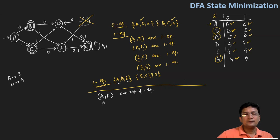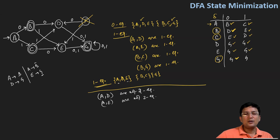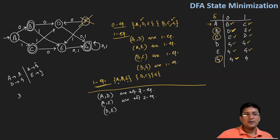Now I'll take the pair A and E. A on zero goes to B and E on zero goes to G. B and G are not in the same set, so A and E are not two equivalent. Let's also check the D and E pair. D on zero goes to G and E on zero also goes to G; D on one goes to G and E on one also goes to G — they are in the same set. So D and E are two equivalent.